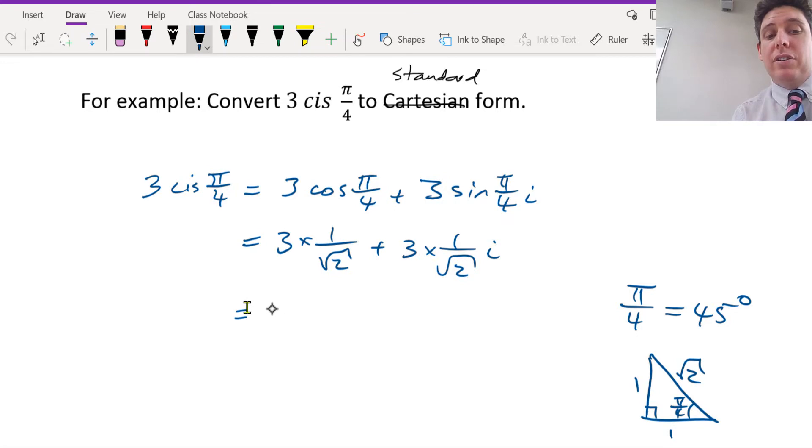Mathematicians don't like surds on the bottom, so it ends up becoming square root 2 over 2 because we times top and bottom by square root 2. And that's it.